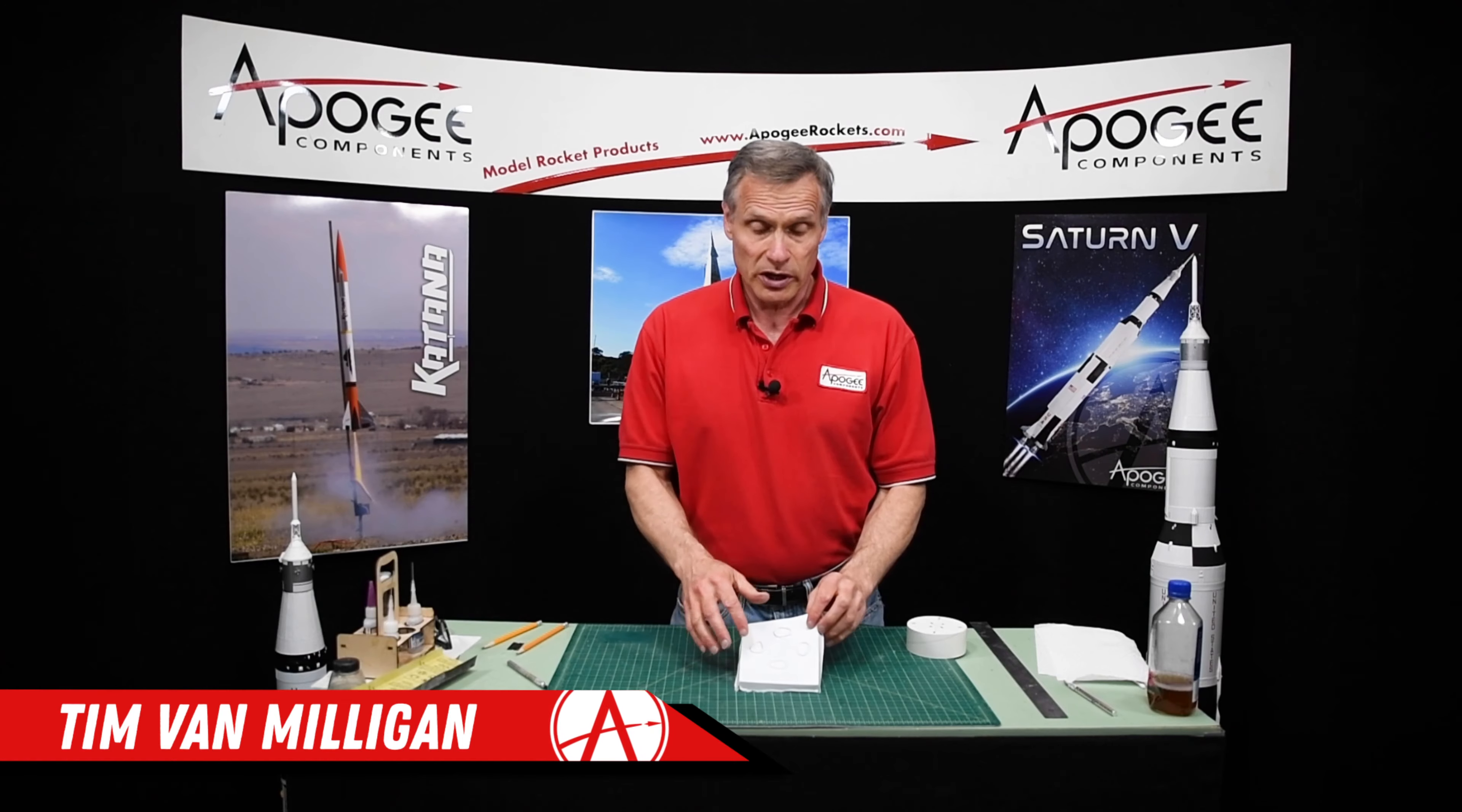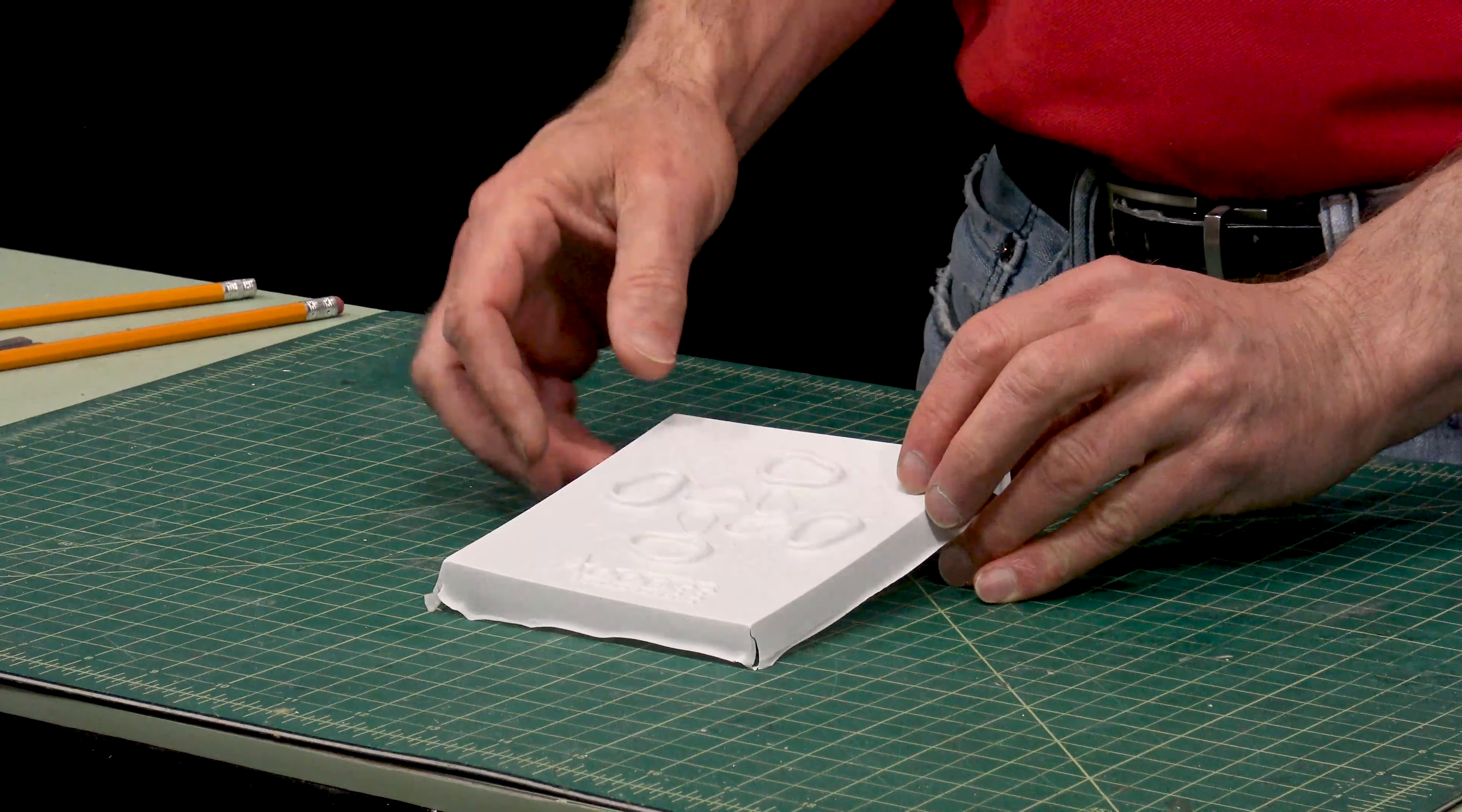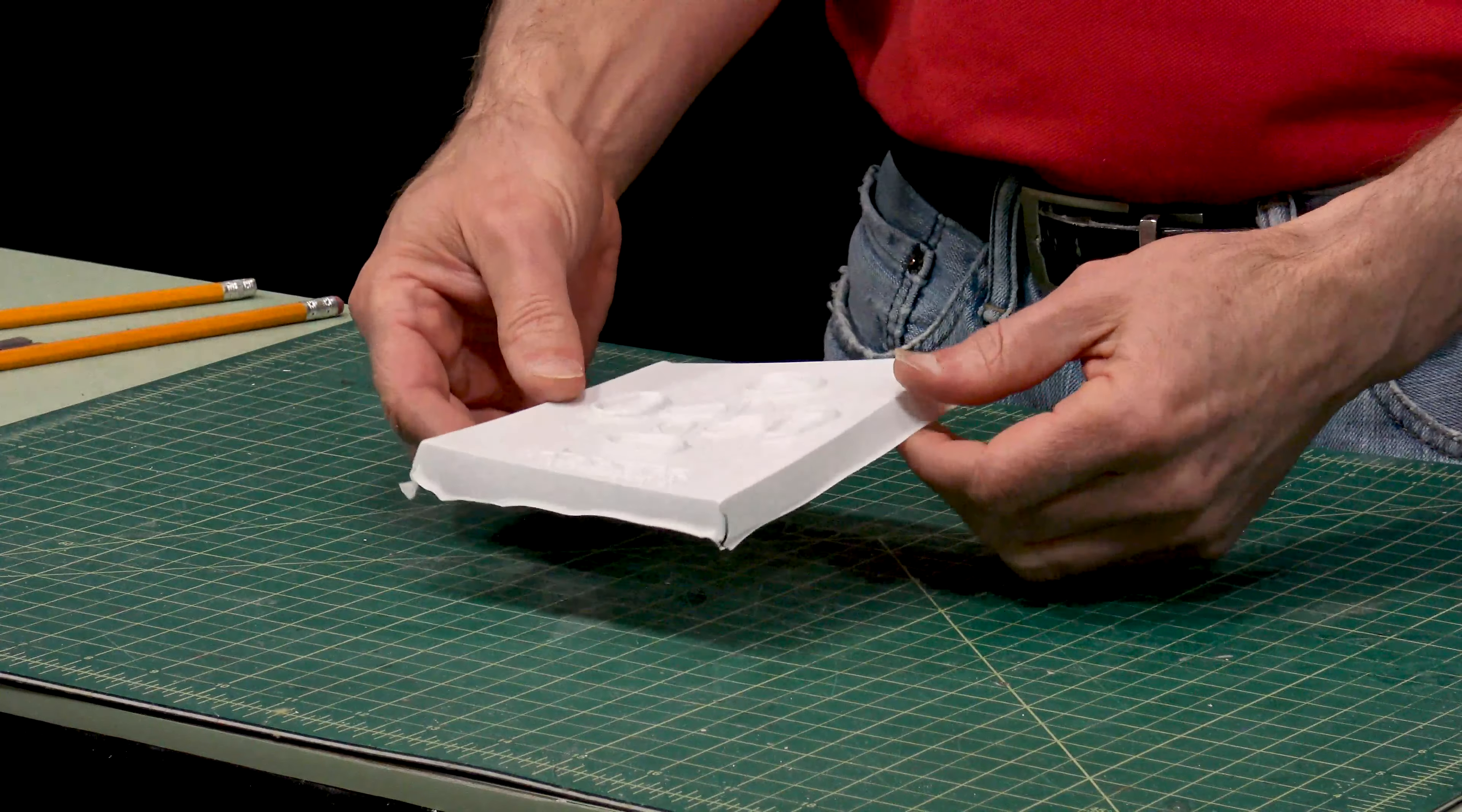There's this vacuform piece right here that we're going to attach to the base of the display nozzles, and we need to cut this out like we did with the other vacuform wraps.